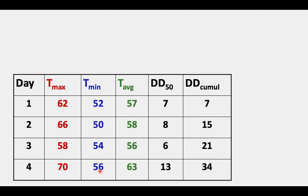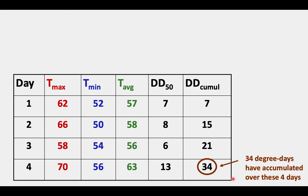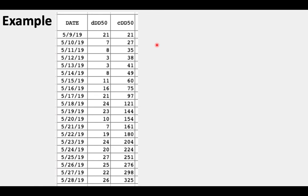Fourth day: a high of 70, low of 56. Average is 63. Subtract 50 and you get 13. Take the 13, add it to 21, you get 34. So 34 degree days have accumulated over these four days.